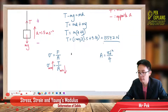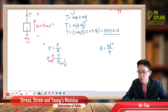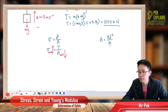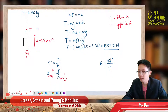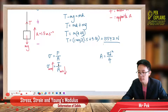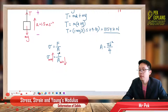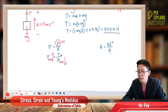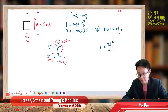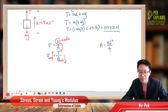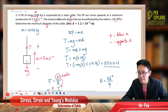Stress is force over area. Why does the cable have force? Because it has tension. So the force in the cable is the tension. Just substitute F with tension. I already have the tension. The maximum stress the cable can withstand is 120 MPa.